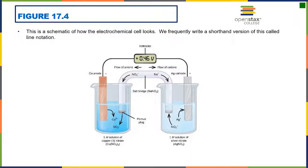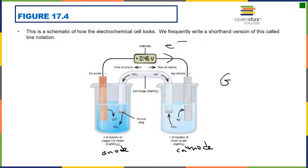We left off on this electrochemical cell. Again, anode, cathode. The electrons are going to flow from the anode to the cathode. We have a positive E-node of the cell and we have a galvanic or voltaic cell, meaning that it is spontaneous.